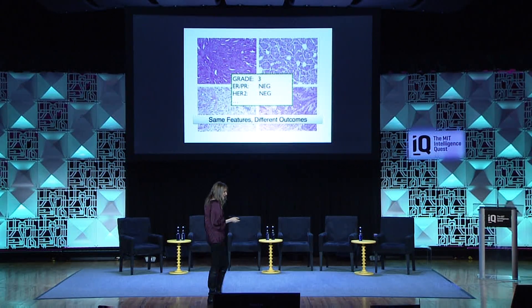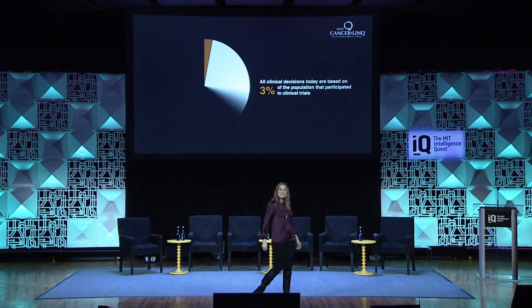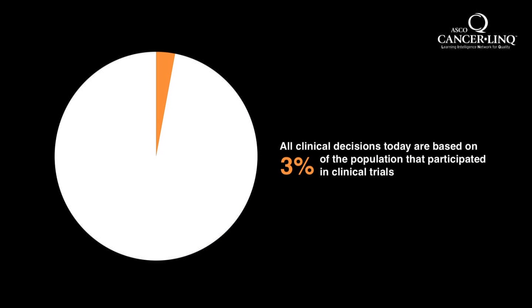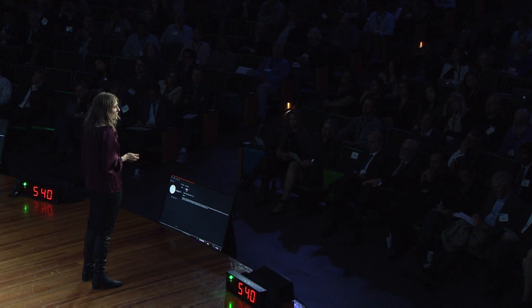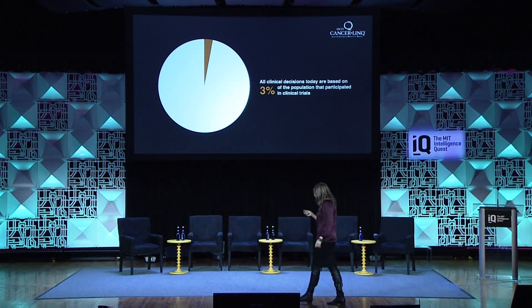I routinely call this next slide a travesty, and it comes from the American Society of Clinical Oncology — they themselves put these statistics on their website. Today all clinical decisions in the United States are based on three percent of the population that participated in clinical trials. So if any of you or your loved ones were not part of a clinical trial, your data is just not used. For anyone who works in machine learning, it's bizarre that we're throwing away 97 percent of the data — and that's how our clinical pipeline today is done.